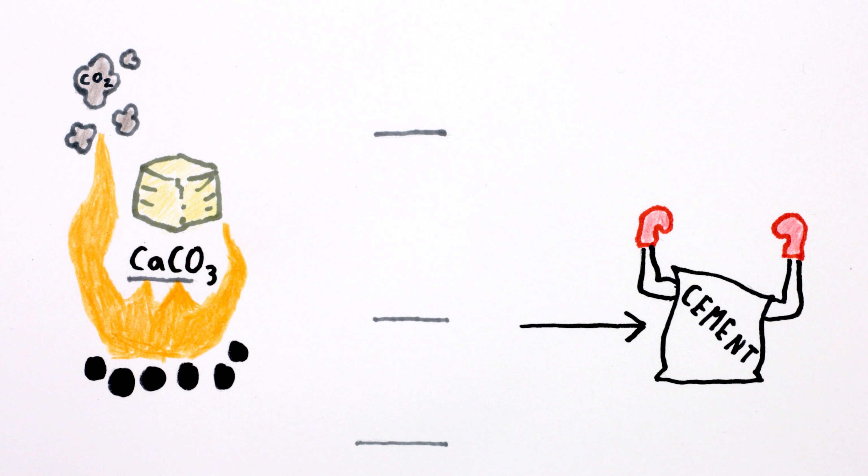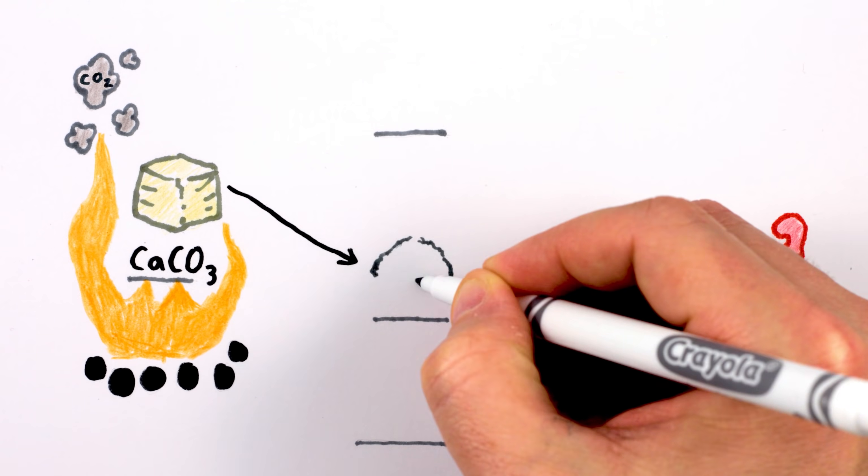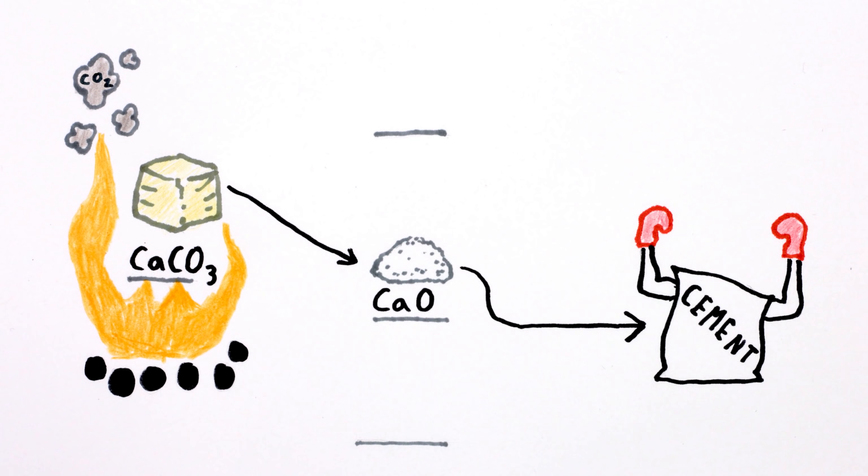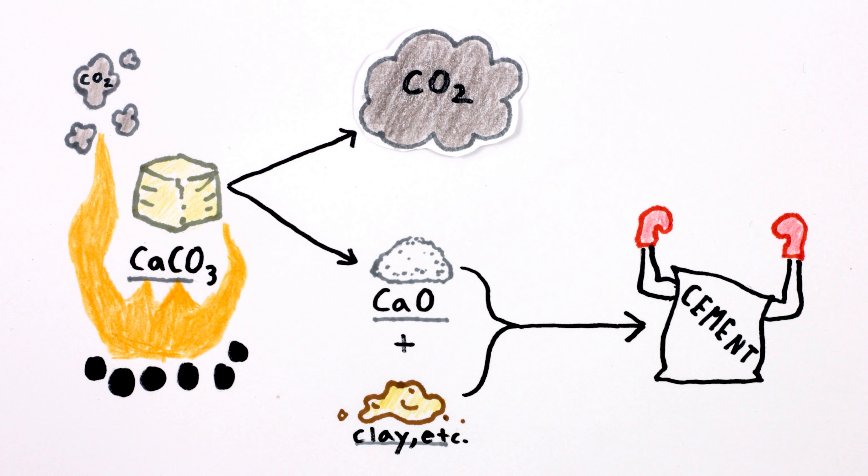Second, once we do that, the limestone chemically breaks down into lime, which goes into the cement along with some other stuff, and carbon dioxide, which goes into the air.